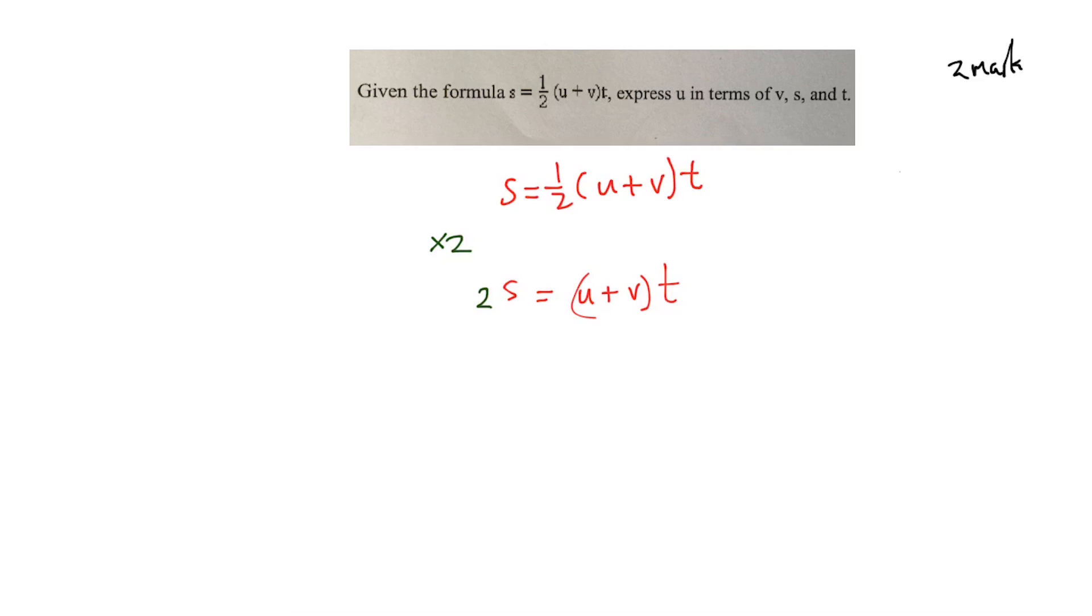So the next thing I'll have is 2S is equal to (U plus V) by T. Where did the half go? The half went on the next side. It'll come like I'm bringing it up. So I'm going to put it in red so you can be part of the team. Next thing I'm going to do is divide by T to get rid of that T, but I have to do it on both sides. So there it goes. You catch that?